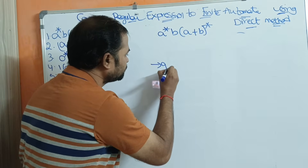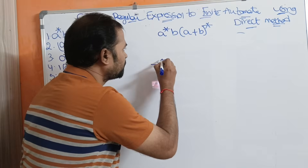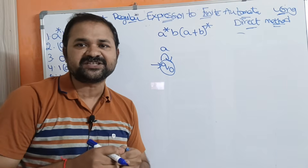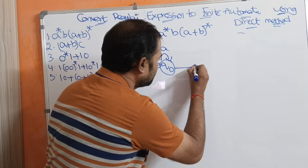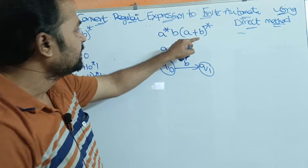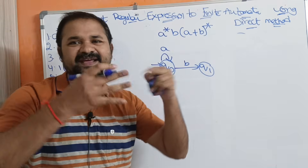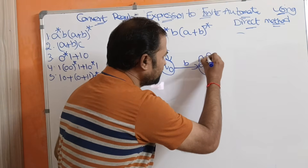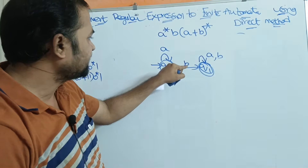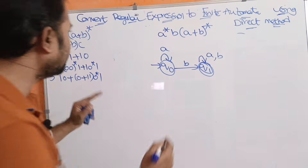Let the initial state be Q0. For A star, we write a self-loop on A at Q0. Next, since we have multiplication (concatenation) with B, we require one more state — Q1. So Q0 on B goes to Q1. Then for (A plus B) whole star, we write a self-loop on A comma B at Q1. Q1 is the final state. This is the finite automata for A*B(A+B)*.